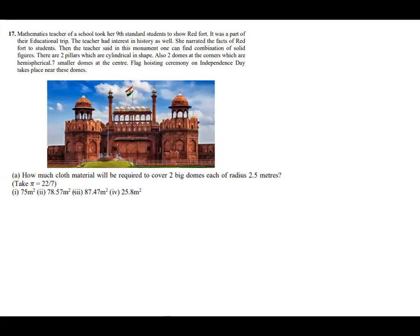Question part one: How much cloth material will be required to cover two big domes each of radius 2.5 meter? The options are 75 meter square, 78.57 meter square, 87.47 meter square, and 25.8 meter square. It is instructed to take pi as 22 by 7.